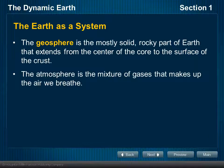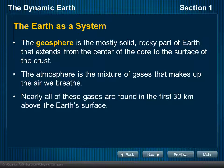Now we'll look at each one of these in turn, starting with the geosphere. The geosphere is the solid rocky part of the Earth — at least it's mostly solid — and it extends from the center of the core to the surface of the crust. The atmosphere is the mixture of gases that make up the air we breathe. It's important to recognize that the air we breathe is a mixture of gases — it is not just oxygen, and in fact oxygen does not even make up the majority of that mixture. All those gases are found in the first 30 kilometers above the Earth's surface.